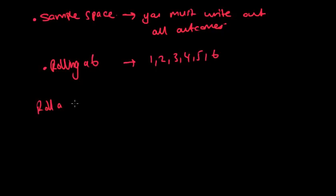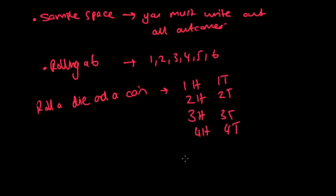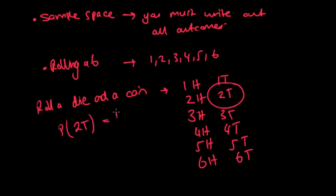Let's say I roll a die and a coin. What's the sample space? I can get a 1 and a head, 1 and a tail, 2 and a head, 2 and a tail, 3 and a head, 3 and a tail, 4 and a head, 4 and a tail, 5 and a head, 5 and a tail, 6 and a head, 6 and a tail. So that's my sample space, it's all the possible outcomes that I've written out. If I then said what's the probability of rolling a 2 and a tail, well then obviously a 2 and a tail is one out of how many outcomes?